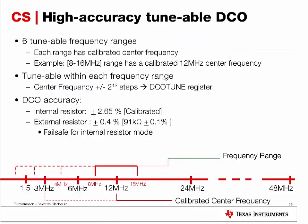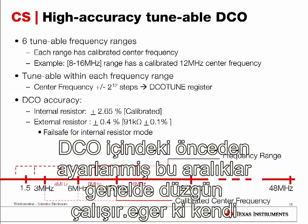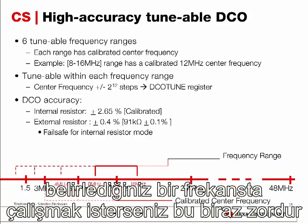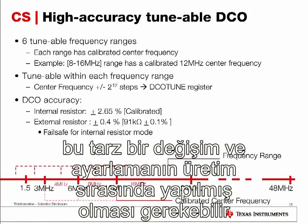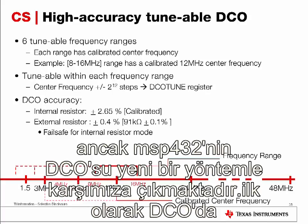On a typical DCO system, a user can select from a number of pre-calibrated frequencies. These pre-calibrated frequencies are usually pretty accurate even across temperature and voltage. However, if you need a frequency that is not one of the pre-calibrated values, it is quite difficult to do so on a DCO system, which typically requires calibration done at production. The DCO of the MSP432 introduces a new way of doing on-the-fly calibration.